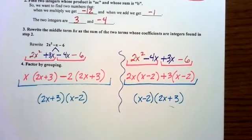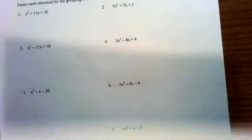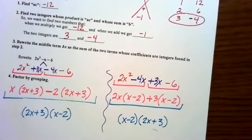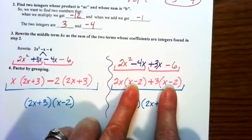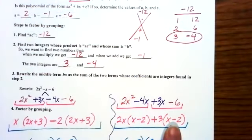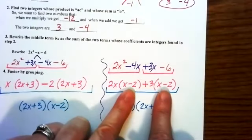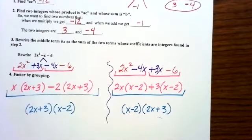Make sure you do the practice problems on the last page. One word of warning: if you satisfy the x-box step and find your integers, but then in the grouping step you don't get a matching binomial in both groups, that means something in your algebra went wrong — go back and check. Otherwise, factoring by grouping is a nice step-by-step process. Good luck, and I'll see you soon.